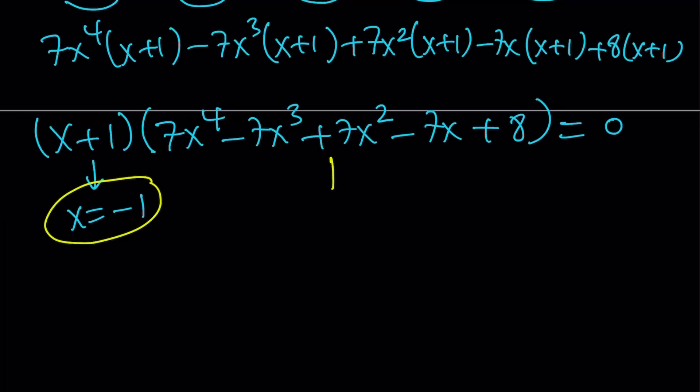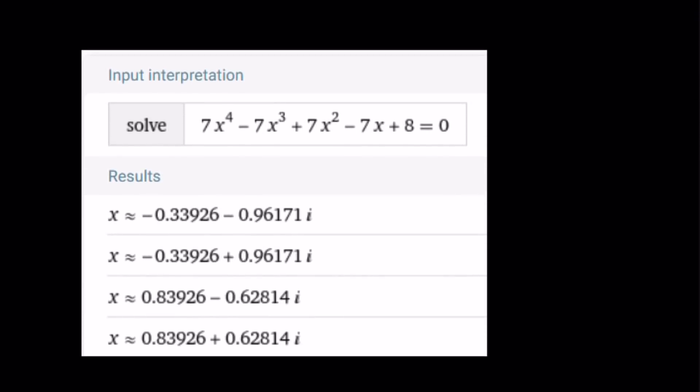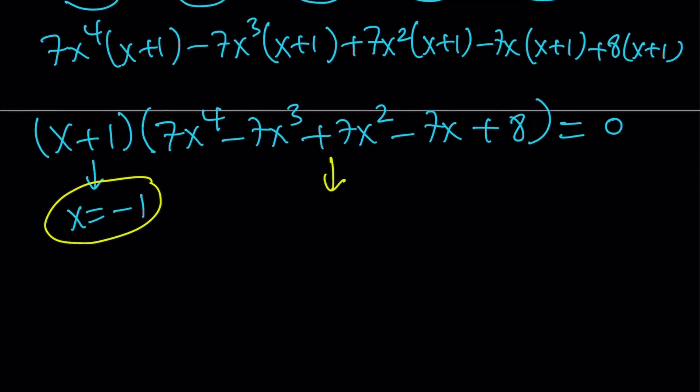But what about the quartic, right? We do have a quartic equation which we have to solve. Or do we have to solve it? Let's go ahead and take a look at the roots of this quartic equation. As you can see here, the other roots or the roots of the quartic are non-real complex solutions. So they are solutions, but we're kind of looking more for real solutions and we got one solution only. So this equation, this quintic, has only one real solution. Let's go ahead and talk about that a little bit. Why this equation has only one real solution.